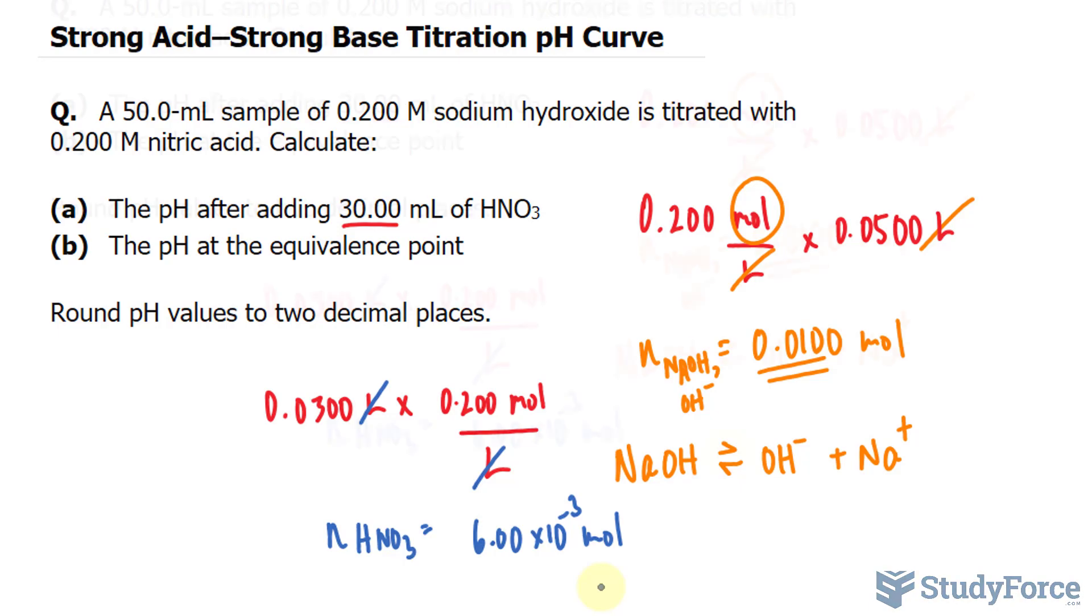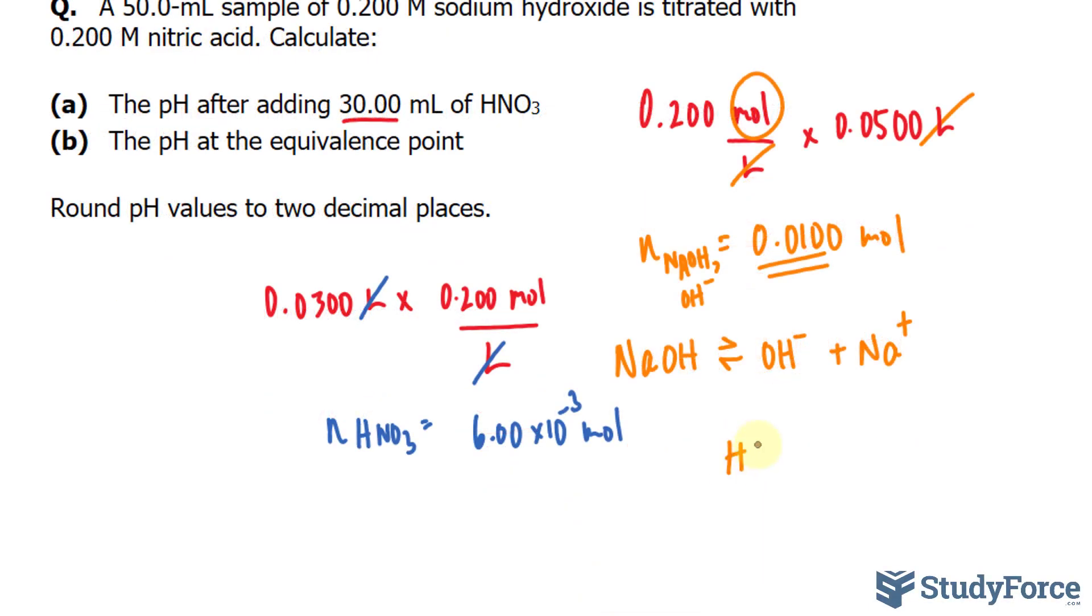Because remember, when a strong acid like HNO3 breaks down, you end up forming H3O plus, plus NO3. Now, of course, you would have to add plus H2O here. So let's set up that table.